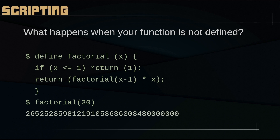What happens if a function is not defined? In that case you just write your own function — for example, factorial. You can define your factorial using a script, because BC is a scripting tool, a programming language. You can define the factorial of 30 and it gives you this huge number — 265 and so on. It's a huge number — factorial of 30.